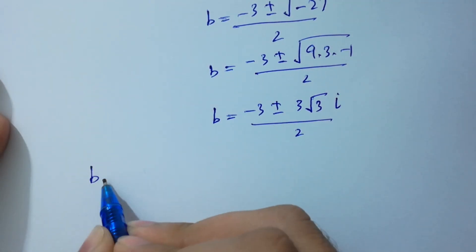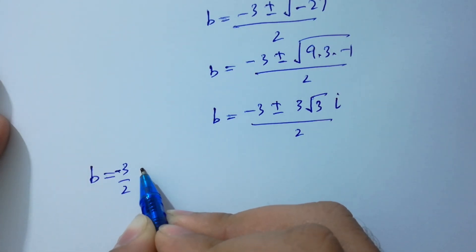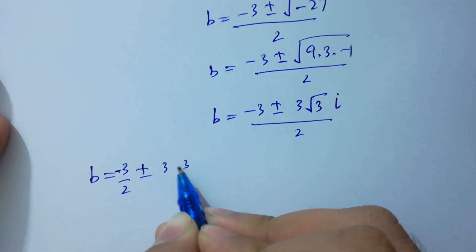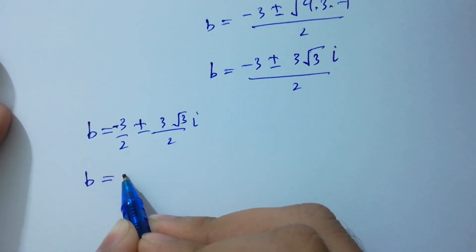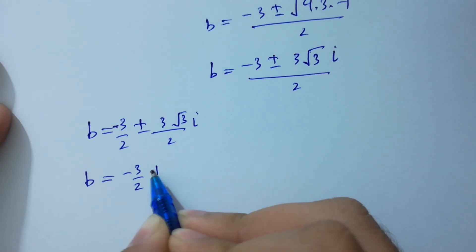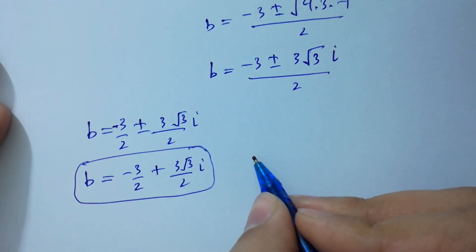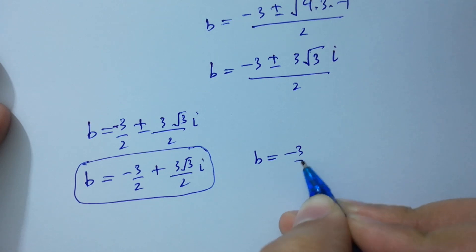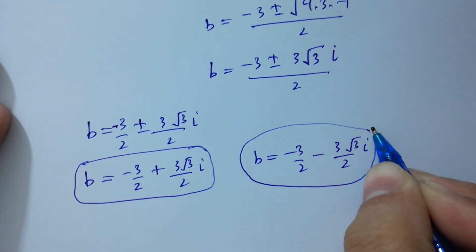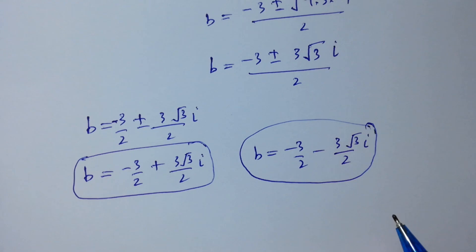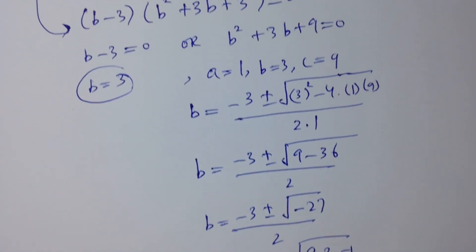The 5th solution is B equals minus 3 over 2 plus 3 square root of 3 over 2 times i, and the 6th solution is B equals minus 3 over 2 minus 3 square root of 3 over 2 times i.